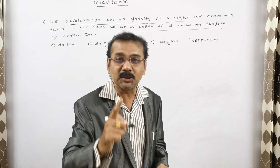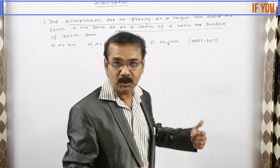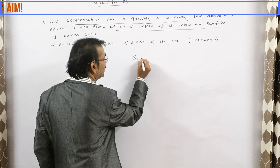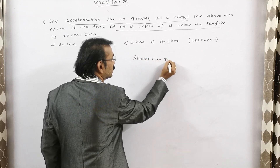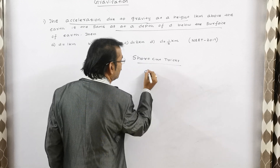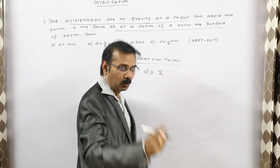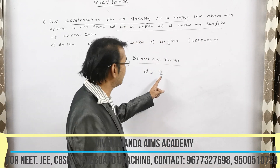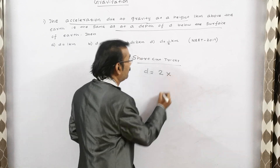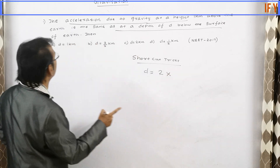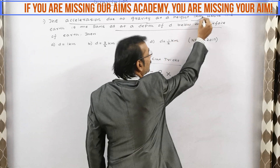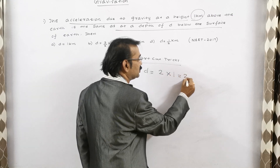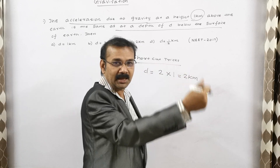Use my cheat code number for this type of sum. The shortcut trick is: to find the value of d, always use the number 2. Multiply the given number — there is only one number given here, which is one kilometer — just multiply by 2 and you will get two kilometers immediately.